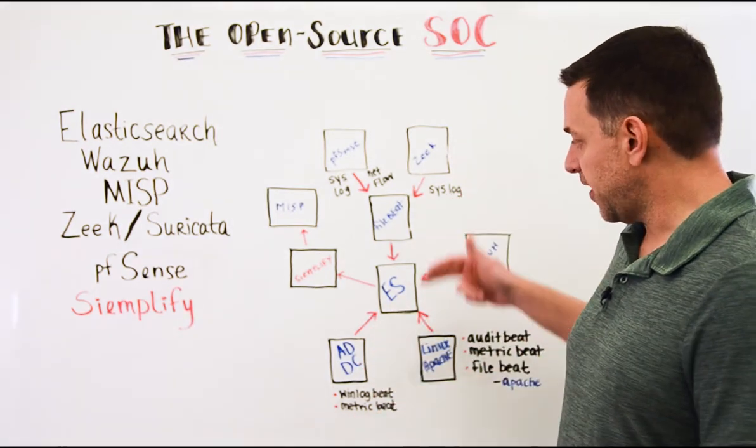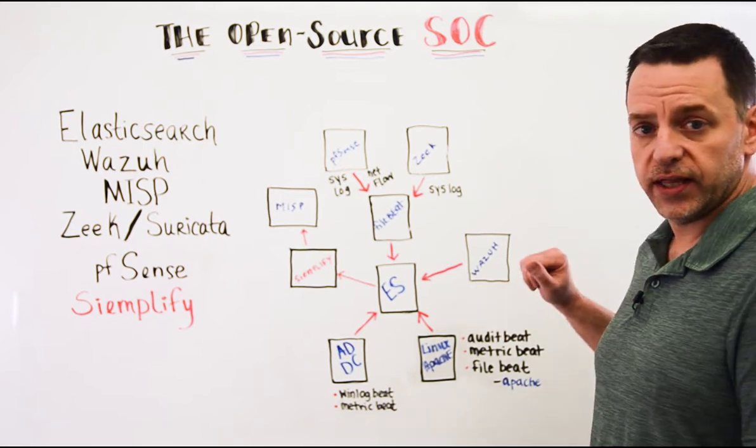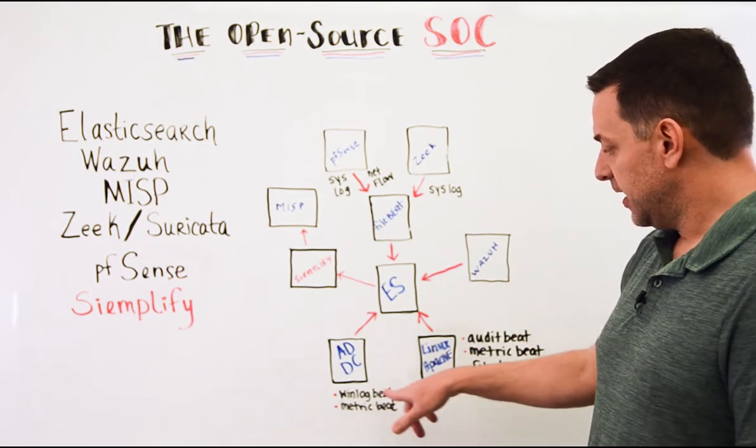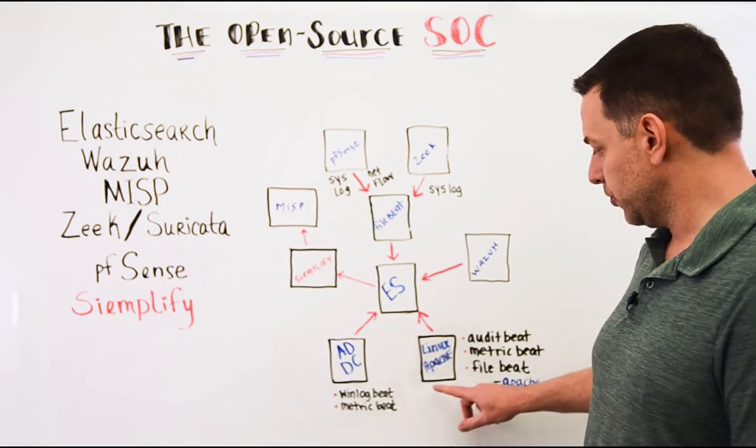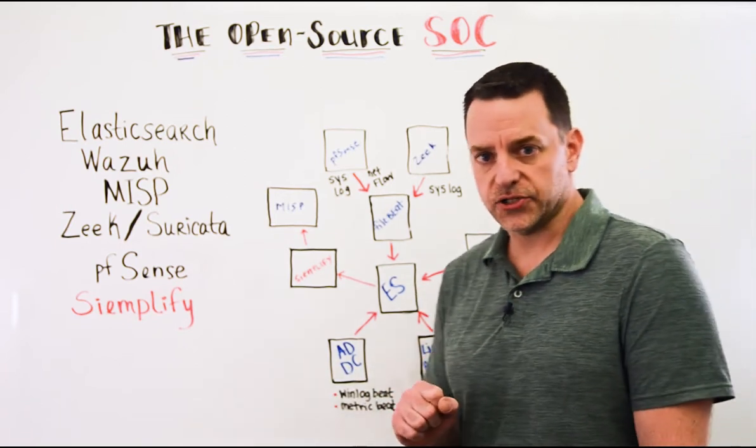Those feed into FileBeat which feeds into Elasticsearch along with our Wazuh agents. From our previous talk we had our generic Windows Domain Controller and Linux Box also feeding data into Elasticsearch.